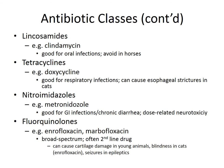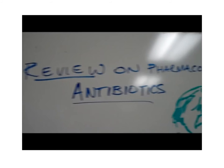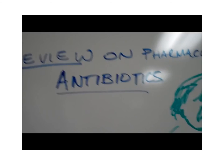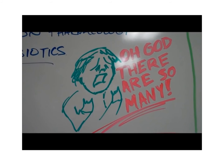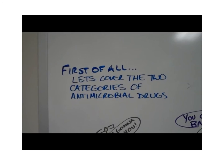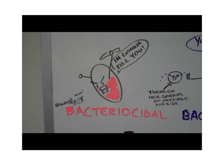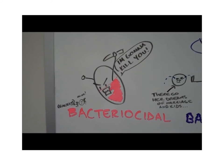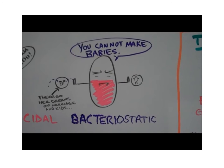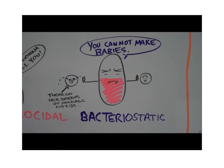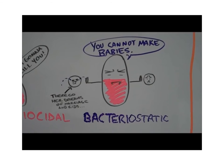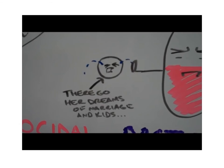Here's a review on pharmacology and antibiotics. There are two categories of antimicrobial drugs. First, bactericidal — these drugs kill bacteria. Second, bacteriostatic — these inhibit growth, most of the time by interacting with protein synthesis, preventing the bacteria from reproducing.